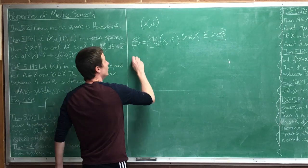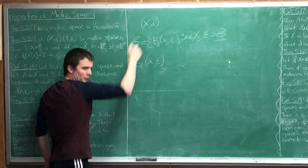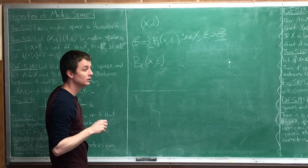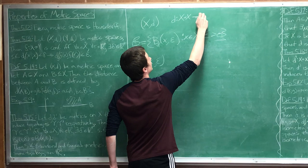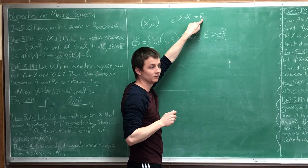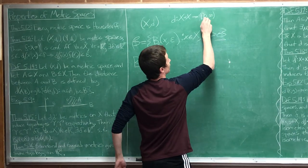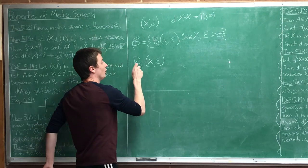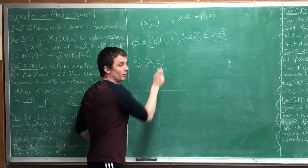What is the open ball B(d, x, epsilon)? Now d here is your metric. Do you remember what a metric is? It's a function from X cross X to R. You give it two points in X and it spits out the distance between them - it's always spitting out a distance, a positive number. The smallest thing to spit out is zero.